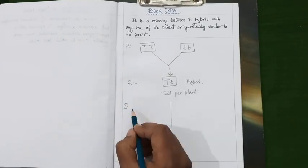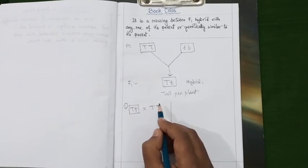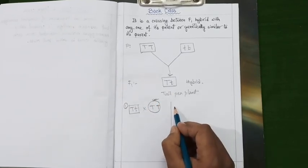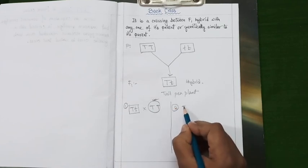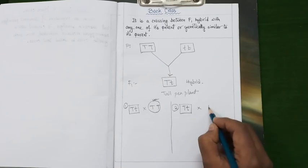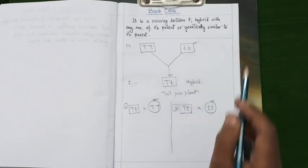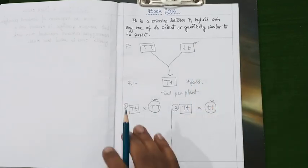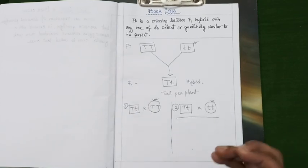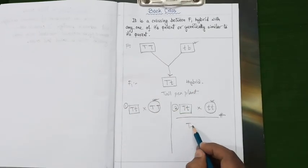The first type is a cross between the hybrid offspring and its homozygous dominant parent. The second type is the F1 hybrid crossed with its homozygous recessive parent. Among these two types of back cross, the second one is very important in the field of genetics and is referred to as the test cross.